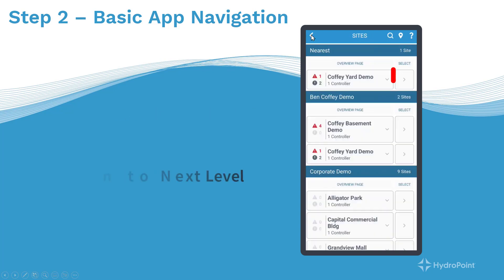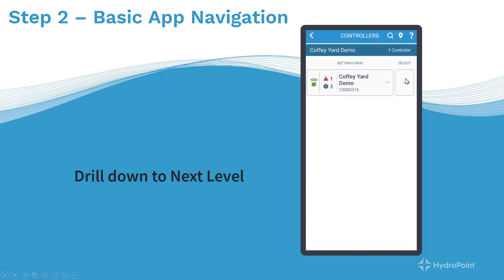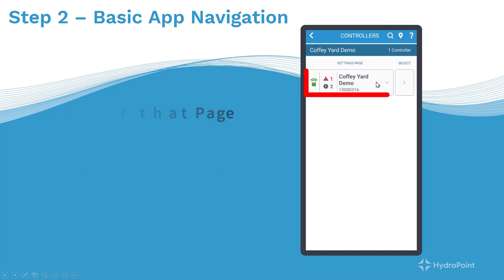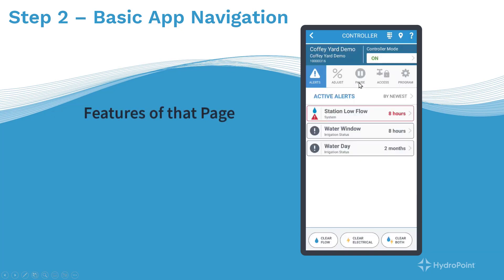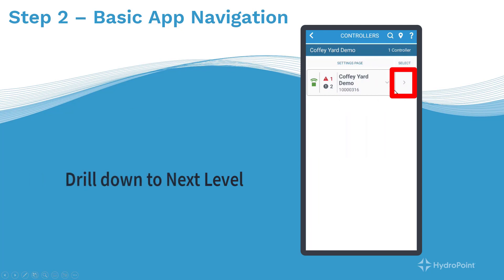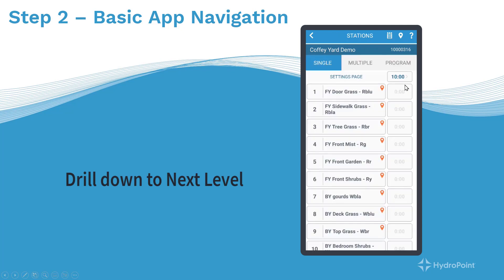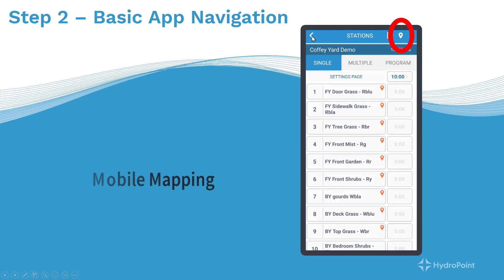If you want to advance from the Sites page to the Controllers page, hit the small button on the right — that drills down and takes you to the controllers for the selected site. To access features for the Controllers page, hit the large button on the left. Or if you want to drill down to the Stations for this controller, hit the small button on the right to see the stations for this controller.